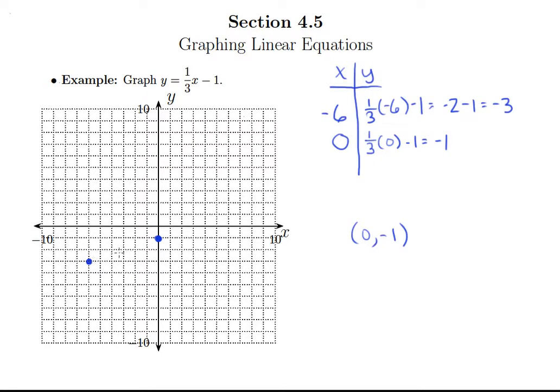Now at this point I have two points and there is only one line that goes through any two points, but we always want to find at least three points. And the reason for that is if I made a mistake in finding one of these two points at this point I wouldn't know it. However if I get one more point and it does not seem to lie in a line with the other two, then I know somewhere a mistake's been made. So that would alert me to that fact and make me go back and check my work.